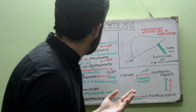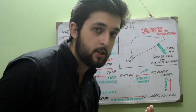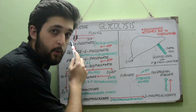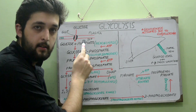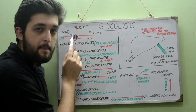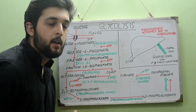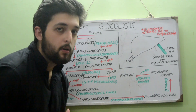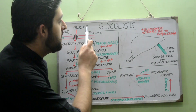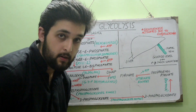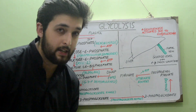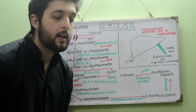First, let's talk about glucose transport. Glucose is transported across the cell membrane via GLUT proteins — proteins embedded in the lipid bilayer that are specialized for the passive transport of glucose from the plasma into the intracellular fluid, not requiring energy.